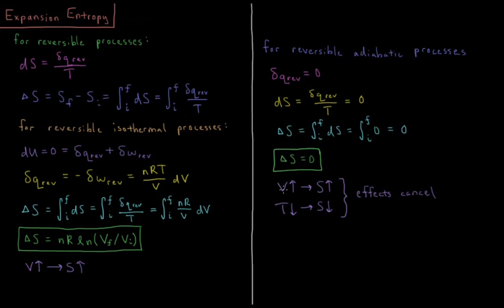As the volume goes up, the entropy does go up, but as the temperature goes down, the entropy goes down as well. These two effects cancel out perfectly in adiabatic expansion and compression. The amount that the entropy increases due to the increased volume is exactly canceled by the amount it decreases due to that decreased temperature.